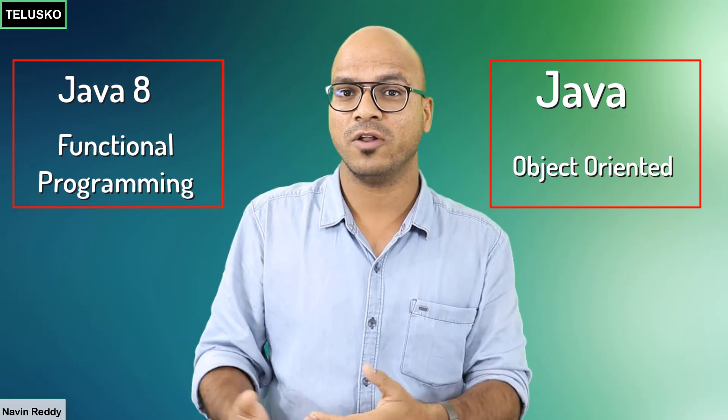Then we have a language like C which supports procedures. When you say Java, Java is object-oriented, but then we got Java 8 where we got functional programming. What exactly does this mean — when you say a language is object-oriented and a language is functional, what's the main difference?